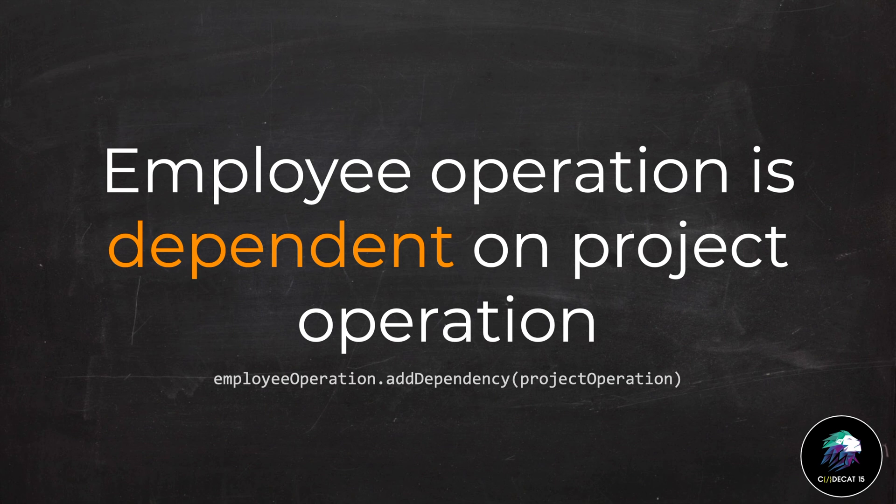Because when the project API has not responded, the employee operation should not start. So this type of dependency, where you just follow a sequence, we call sequential API dependency. Those who have seen the handling dependency video will think this is a simple requirement which we can solve with operation queue, but there is a small twist which I will explain in the demo.